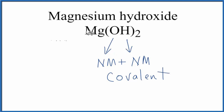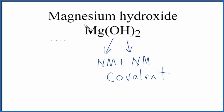So overall, we have the positive magnesium and the negative hydroxide ions. They're attracted, and we have ions — it's an ionic bond. But within the hydroxide, within the OH, that oxygen and hydrogen is bonded pretty tightly, so it stays together. And those bonds are covalent bonds. This is Dr. B answering the question whether magnesium hydroxide is ionic or covalent. Thanks for watching.